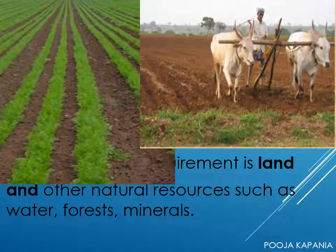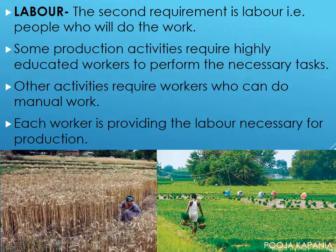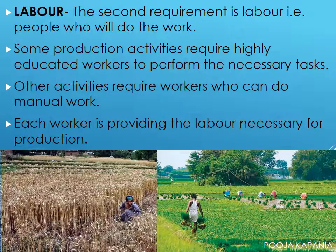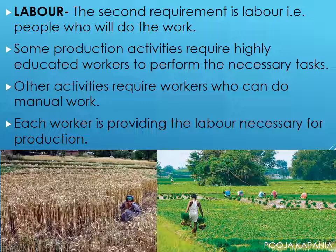The first requirement is land, and other natural resources such as water, forests and minerals. The second requirement is labor — that is people who will do the work. Some production activities require highly educated workers to perform the necessary tasks, while other activities require workers who can do manual work. Each worker provides the labor necessary for production.